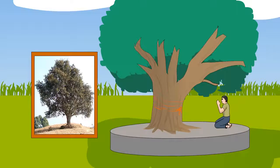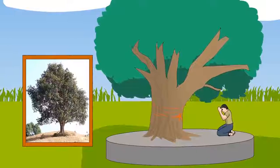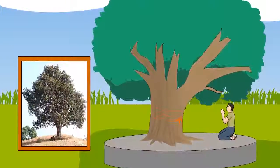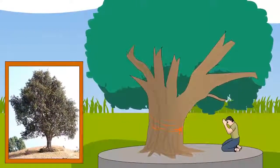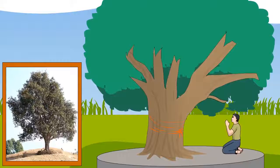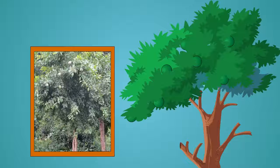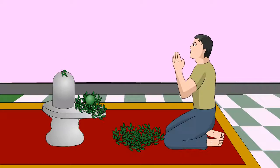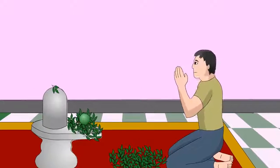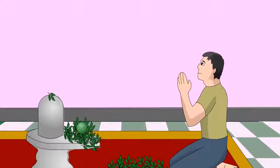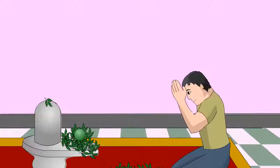Pipal is commonly seen near temples. It is considered sacred and is worshipped by many people. Bilva is a medium-sized thorny plant, whose leaves are offered to Lord Shiva. Its fruit is used to make syrup.